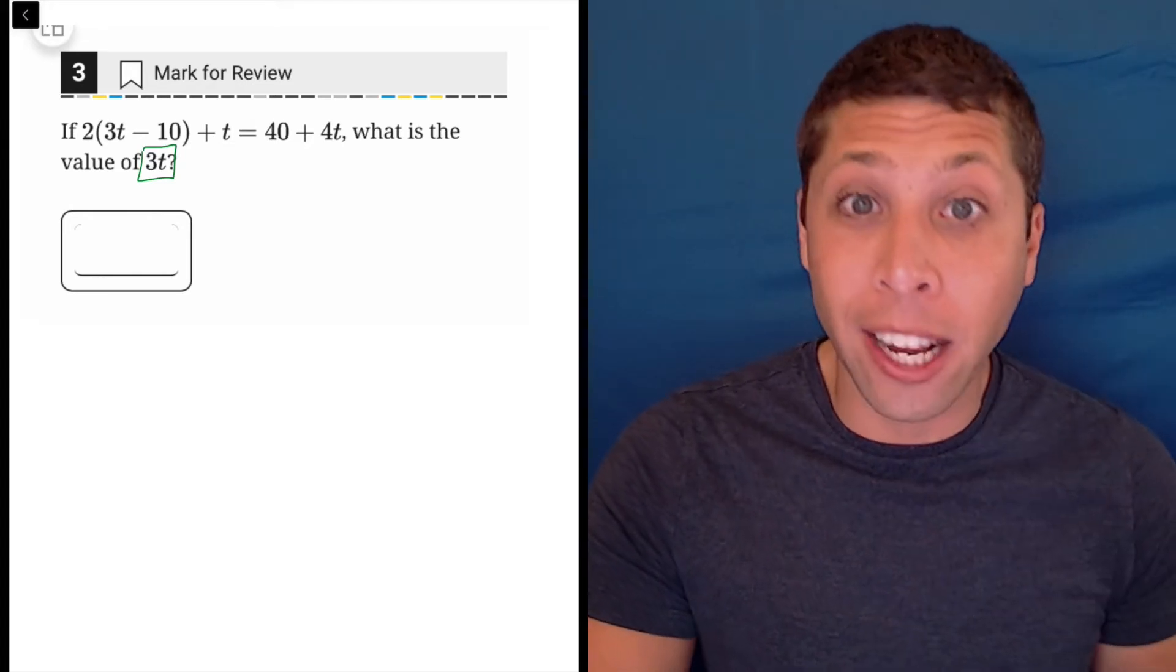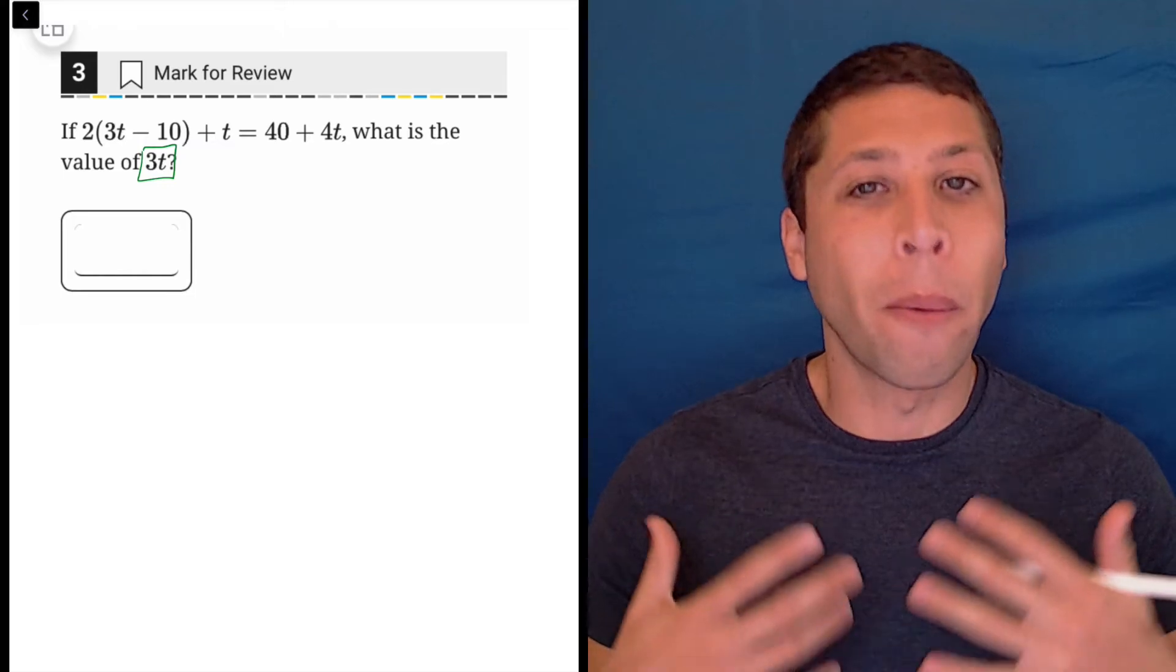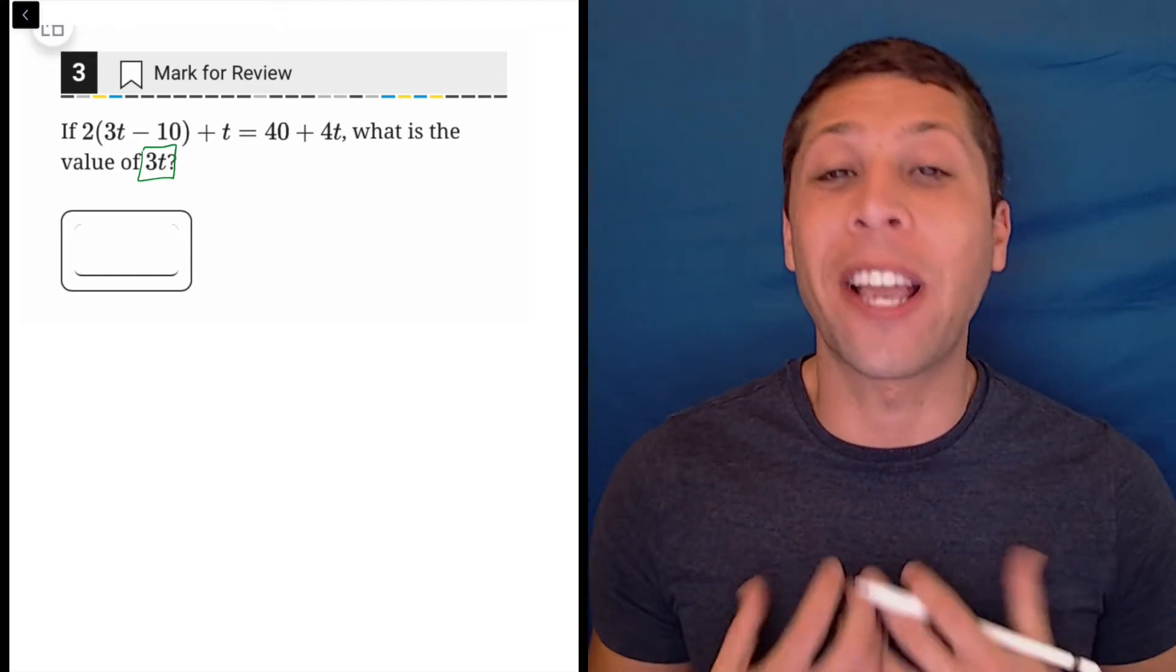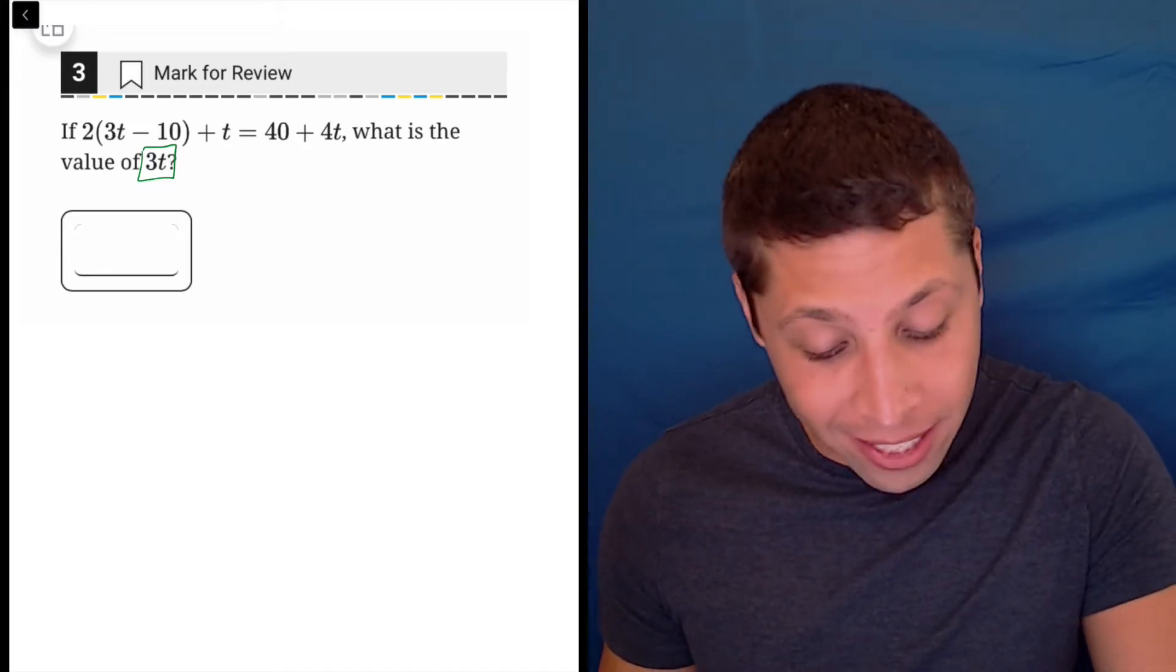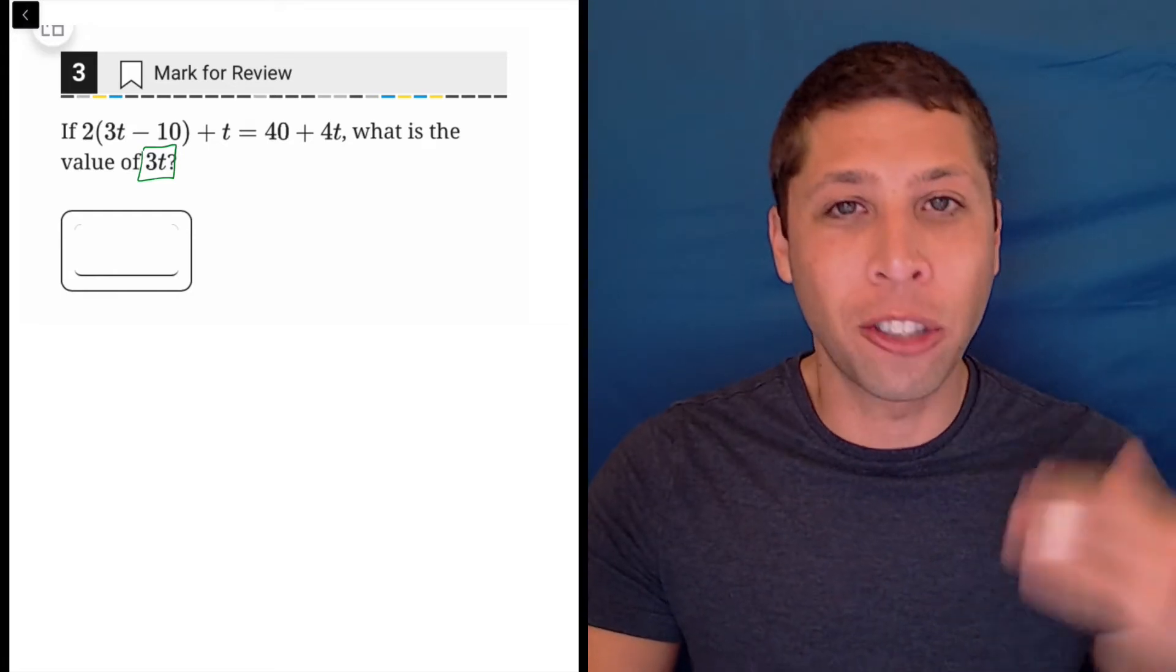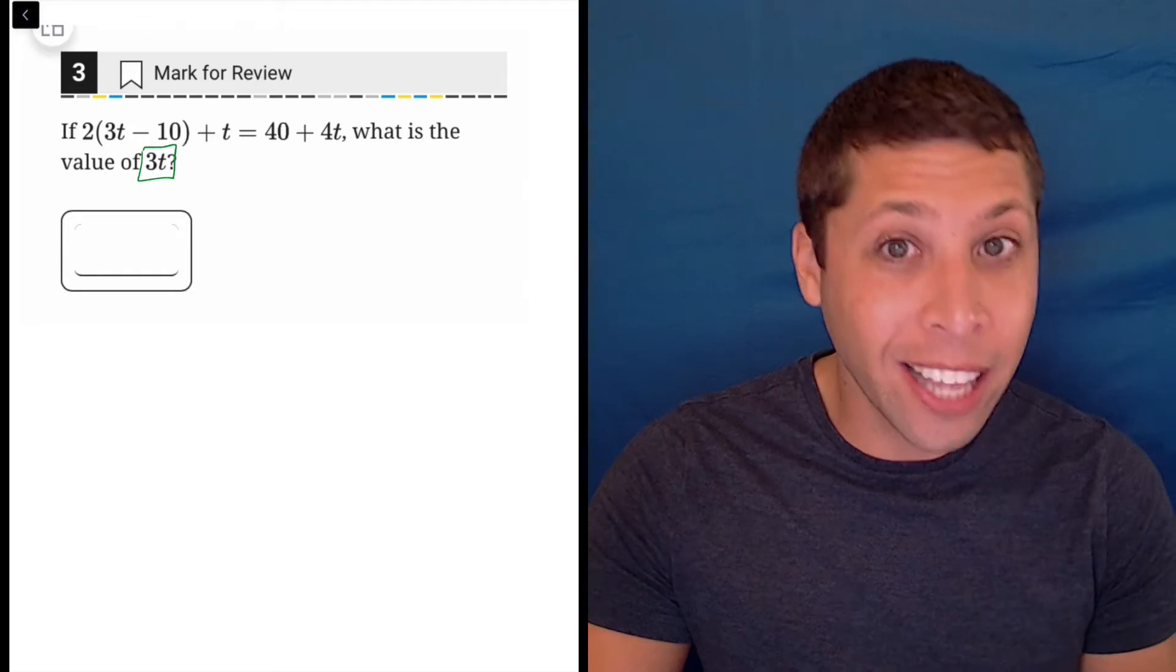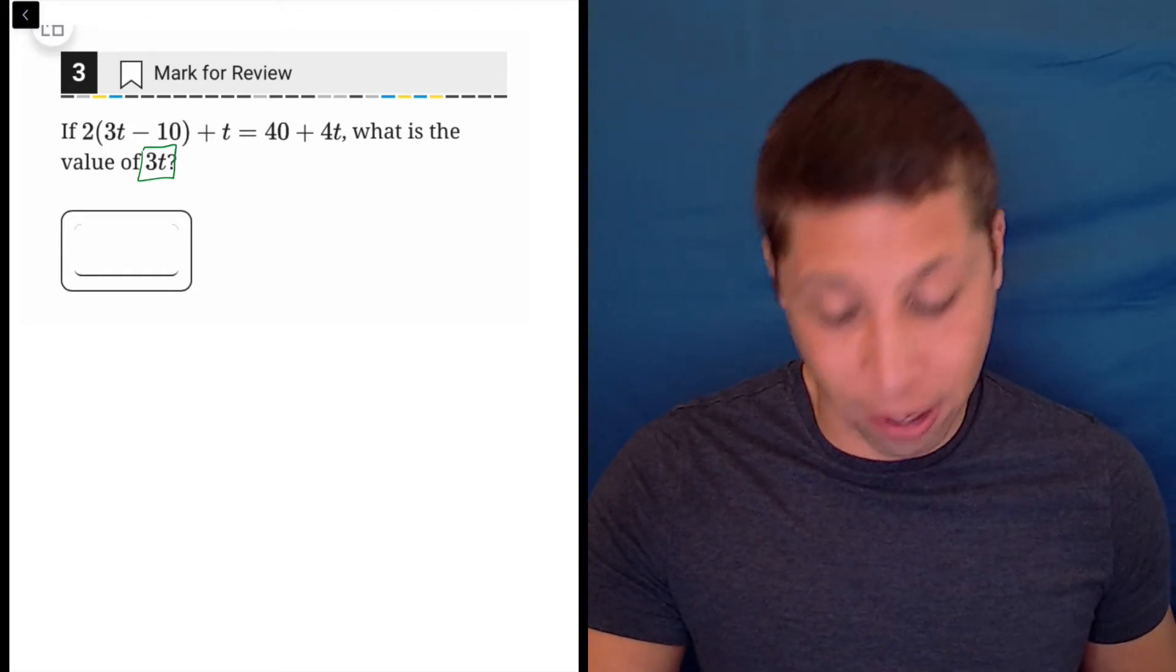They're not asking you to solve for x or to solve for t. They're asking you for this weird thing. So when we're done with the question, we're going to see an x equals, a t equals, and we're going to feel really good that we did the job, but we always have to remember the SAT adds these little extra steps just to see if you're paying attention. So start off like I did by writing down or highlighting whatever it takes, the thing that they want so that you remember to go back to it.